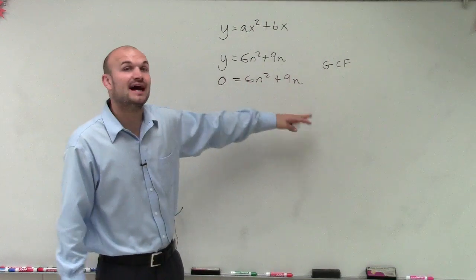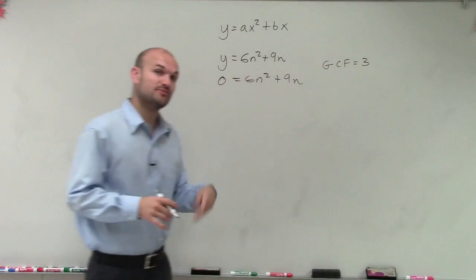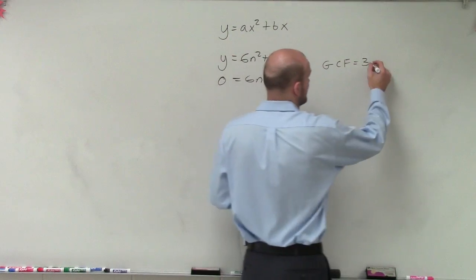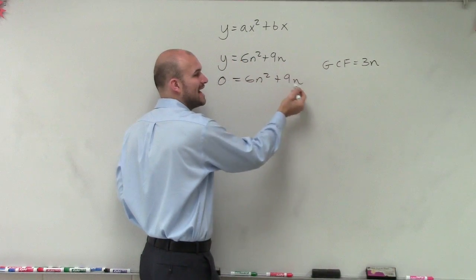Well, you can see that 6 and 9 are both divisible by 3. So we can say they can both share a 3 because I can divide 3 into both of them. And they both share an n. Now they don't share an n squared because this isn't an n squared, but you can divide an n into both of them.